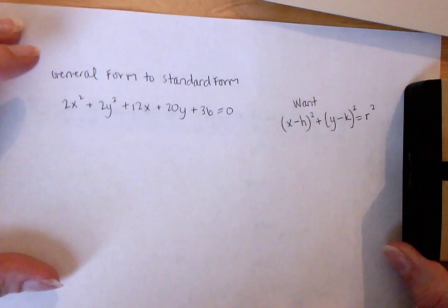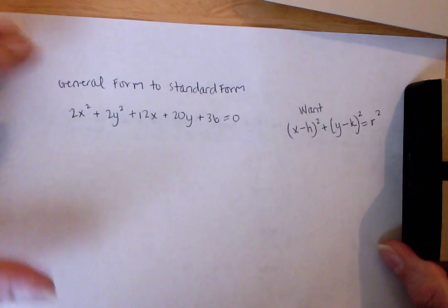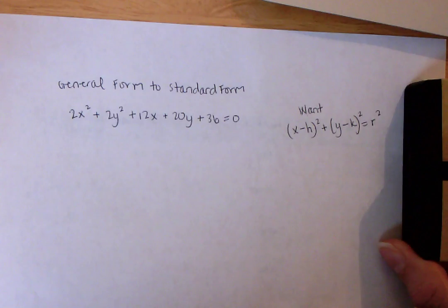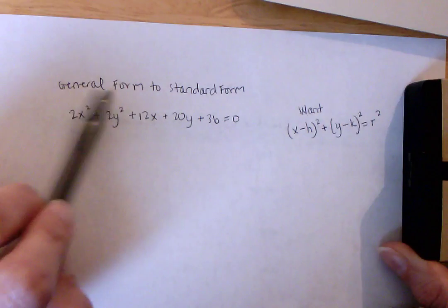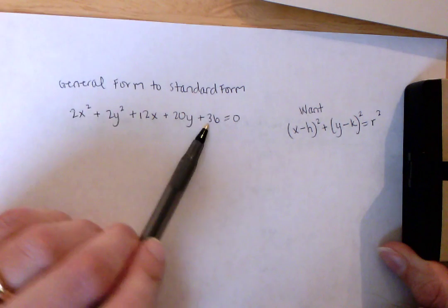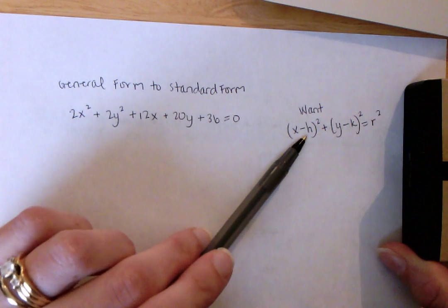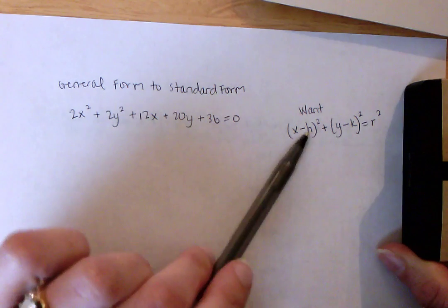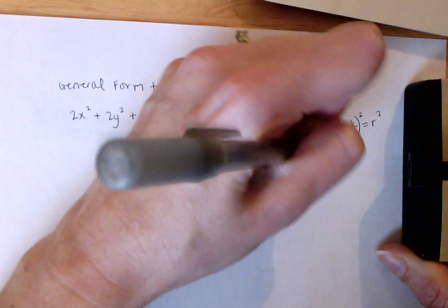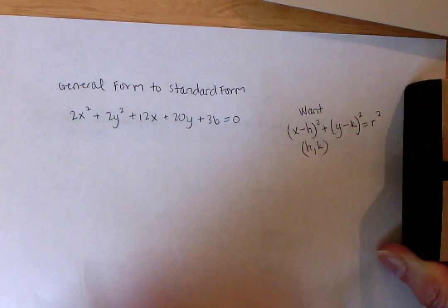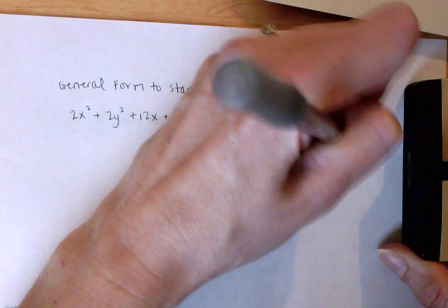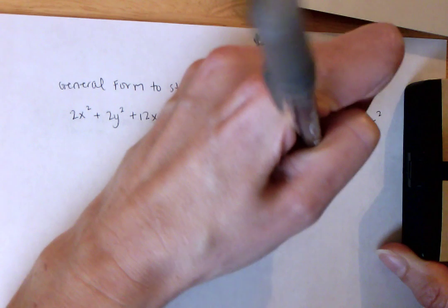Hi geometry students. We're working with circles as you may remember, and you're going to have to complete a worksheet today that has you completing the square and basically going from the general form of an equation to the standard form of an equation, which is this.